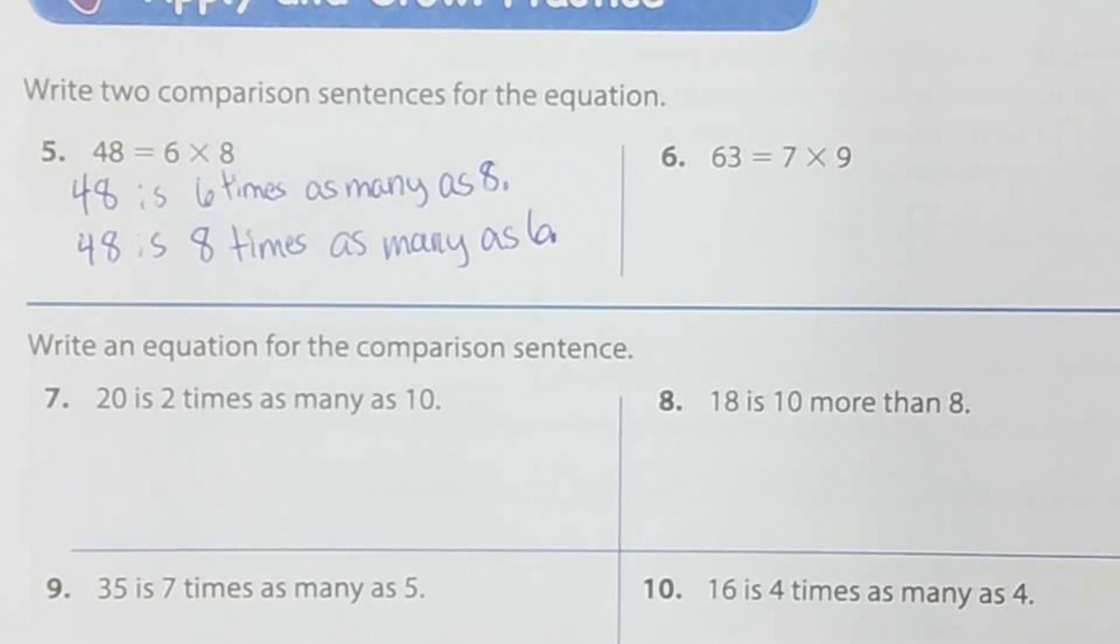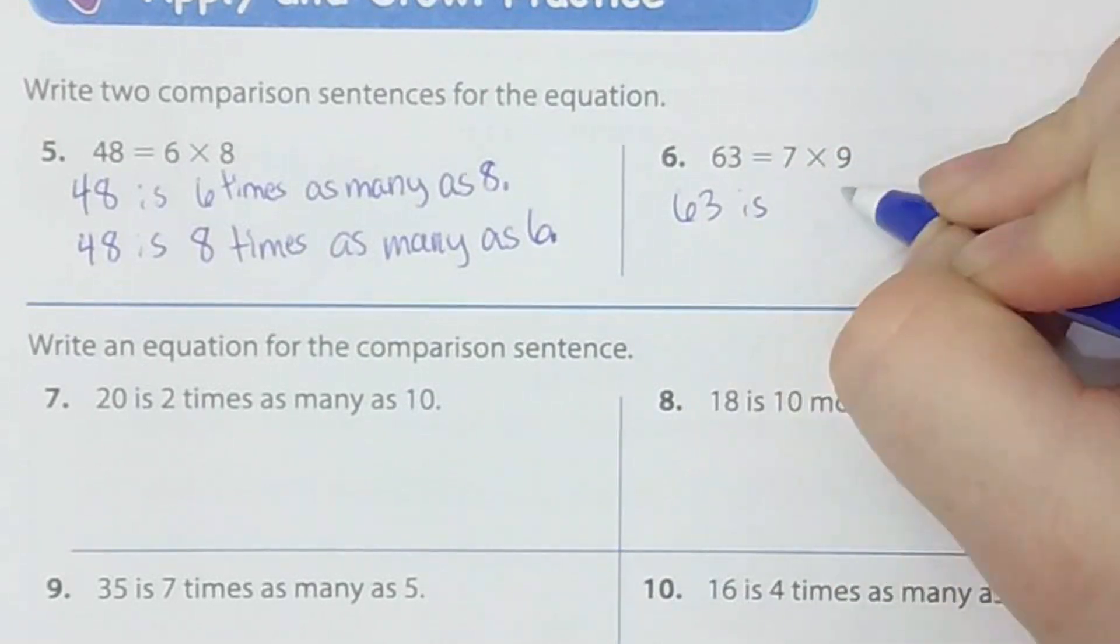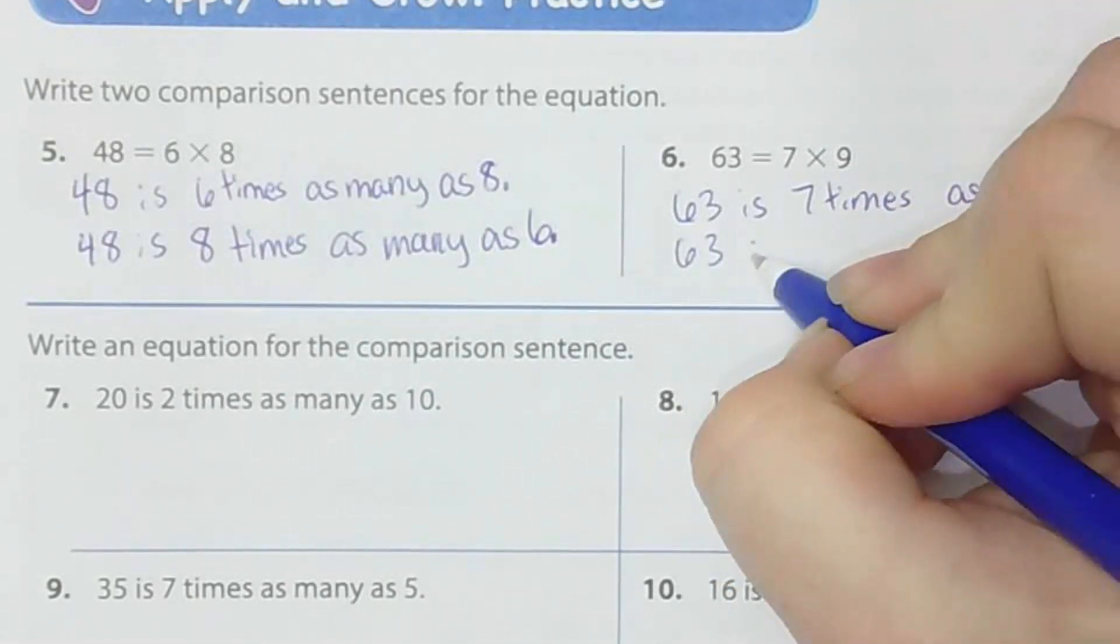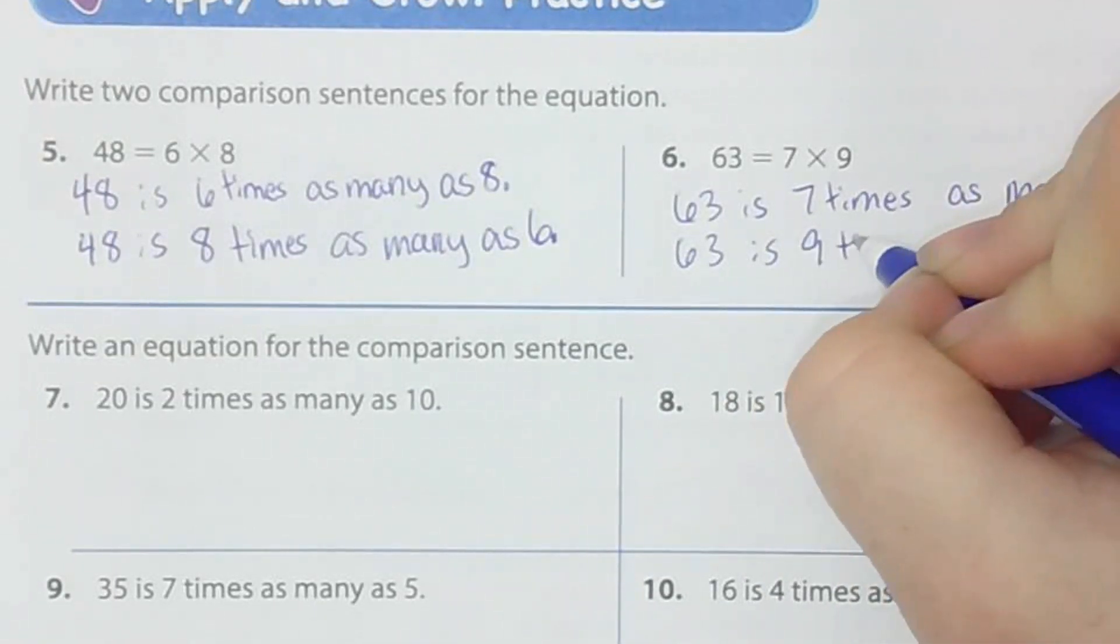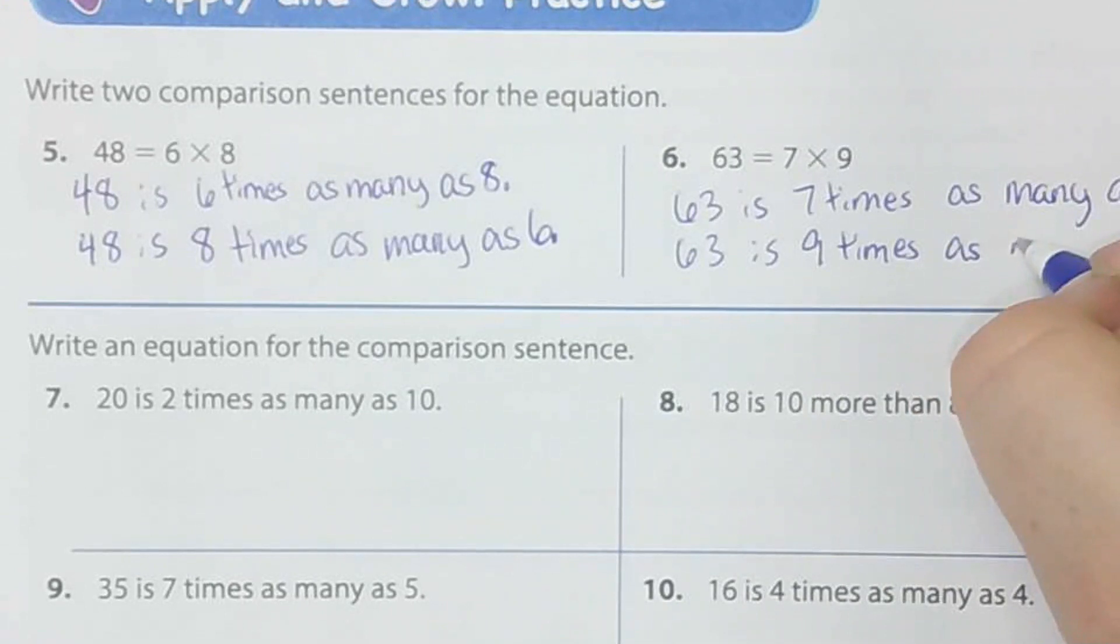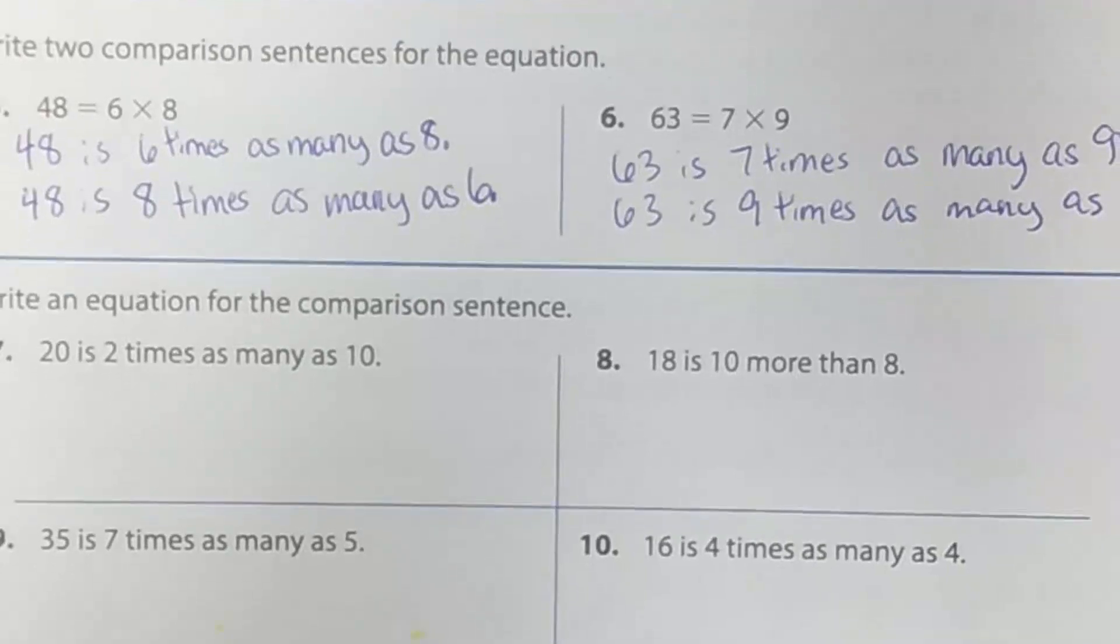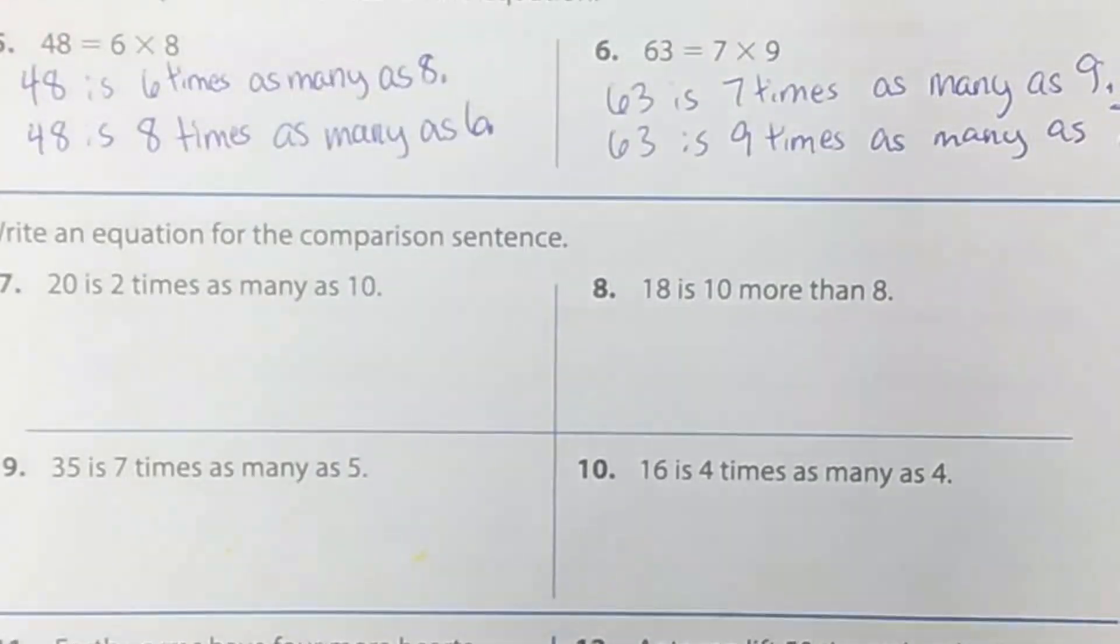Number 6. 63 is 7 times as many as 9. Good. Go ahead. 63 is 9 times as many as 7. Perfect. Scoot that over a little bit. 63 is 7 times as many as 9. 63 is 9 times as many as 7.